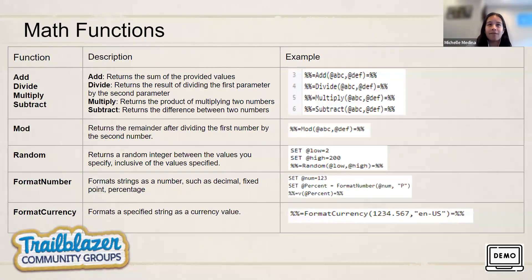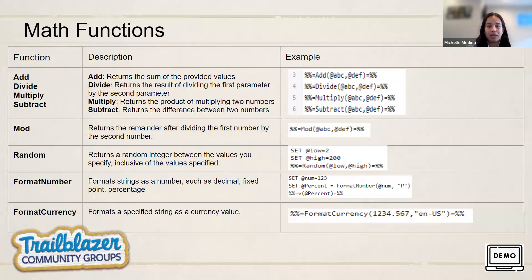Let's start with the add function. On the left we'll have the function, and on the right a description and example. The add function returns the sum of the provided values. Given variables ABC equals five and DEF equals three, the system would output eight. With the divide function, it returns the result of dividing the first parameter by the second. Given ABC equals 10 and DEF equals five, the output would be two.